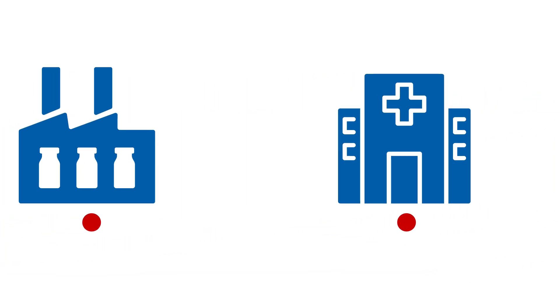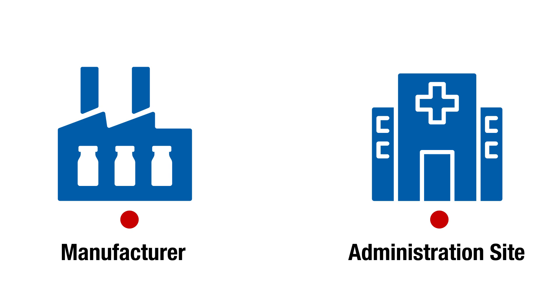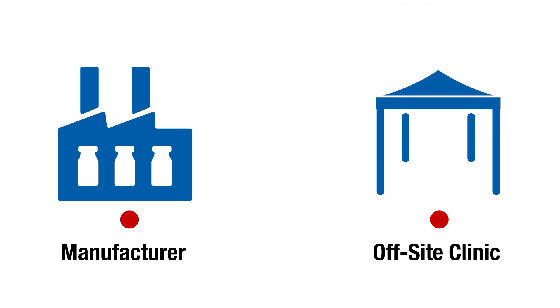Ideally, vaccines should always be shipped from the manufacturer to administration sites. Transporting vaccines between sites should only be done when necessary. When planning an off-site clinic, such as a community vaccination event, it is best to have the vaccines delivered directly to the facility. If this is not possible, it may be necessary to transport the vaccines.